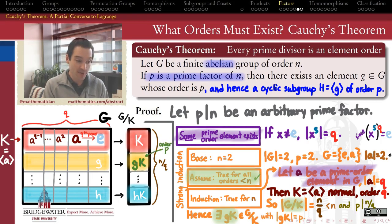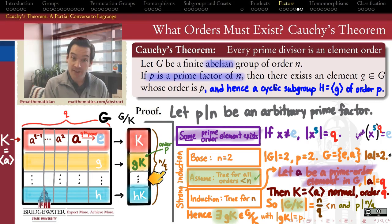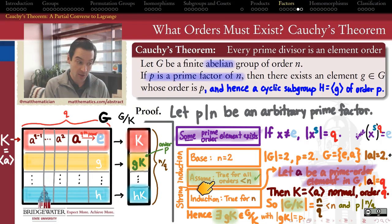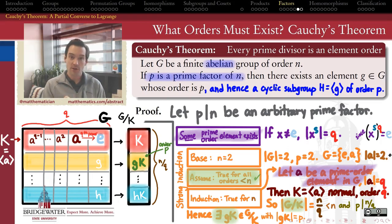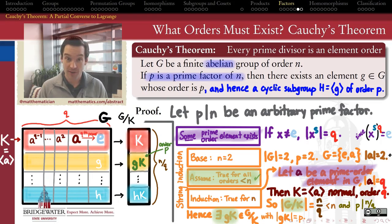By the induction hypothesis applied to G mod K, there exists an element of G mod K — call it gK — that has order P in the factor group. Now we have an element of order P in the factor group, but we need an element of order P in G itself. So we must lift that element out of the factor group back up to the full group G.